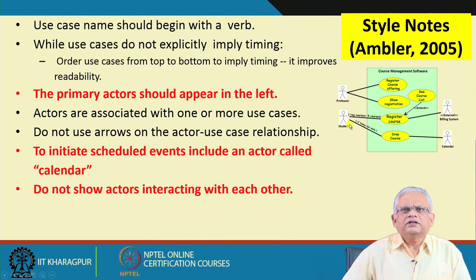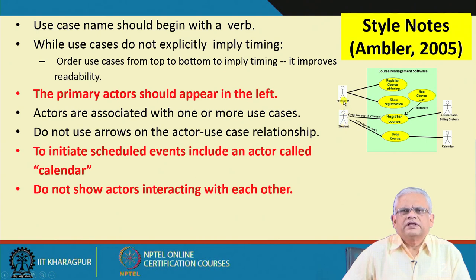The actors interact with the system, but if there is an interaction between the actors themselves, this is not part of the system that we are modeling. We are modeling only the computer interaction of the actors with the system. Direct communication between different actors — for example, a student telephoning a professor — is not represented here. Only the interaction of an actor with the system is represented.